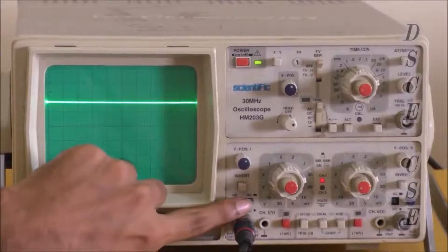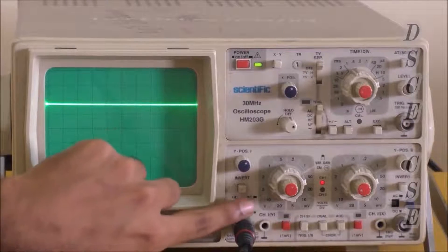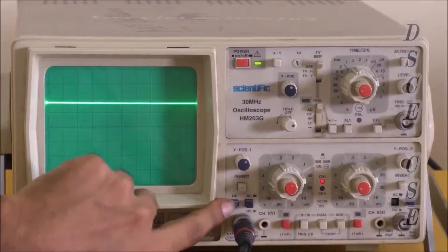This is the switch used to shift from AC and DC. When it is pressed in it is DC and when it is pressed out it is AC. This is the ground button.